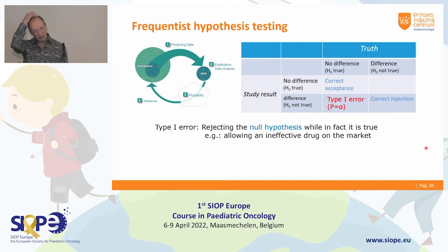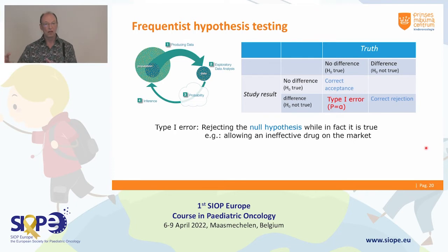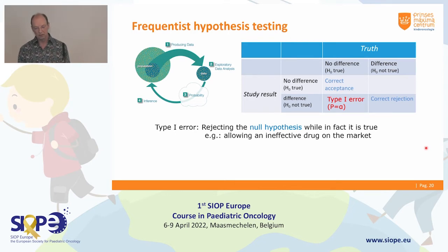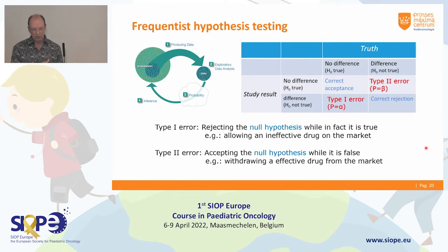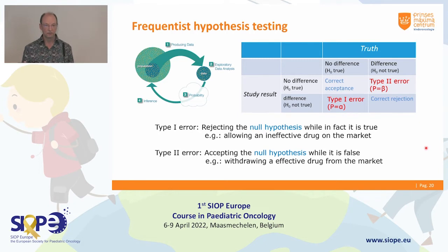First, we can conclude that the null hypothesis is not true — we find a result extreme from the null hypothesis and reject it. But there is always a chance we wrongly reject the null, which we call the alpha level or type one error. Translated to your world: you are allowing an ineffective drug to go onto the market — a big mistake, so we try to keep that error small. Then there is the other mistake: we say there is no difference, but actually there is. That's type two error, called beta, and one minus beta is the power. Translated: it is withdrawing an effective drug from the market.